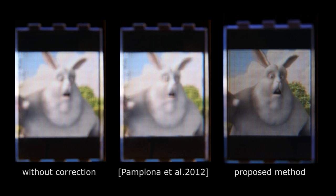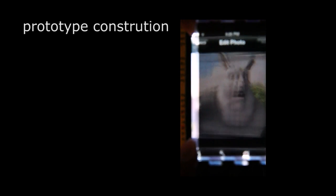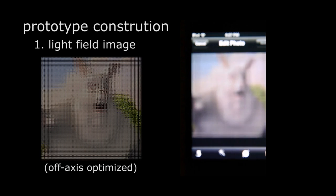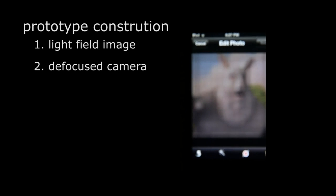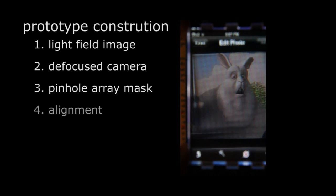Here we show the comparison using a short animation. Notice how sharp the face of the bunny and the background tree. The prototype is also easy to construct and we will illustrate how to build it in a few seconds. We first show a pre-filtered light field image on display. When viewed by the defocus camera, everything is blurred. Placing a pinhole array mask on top reveals a sharp image after some alignment.